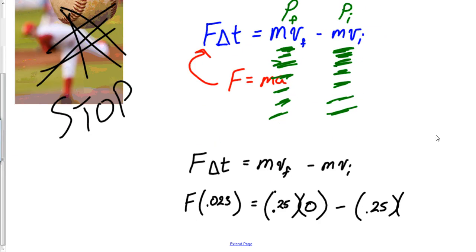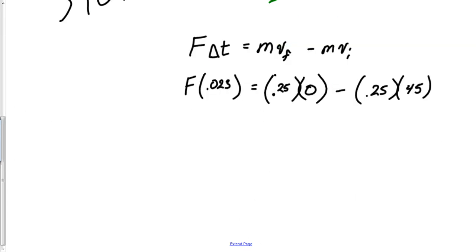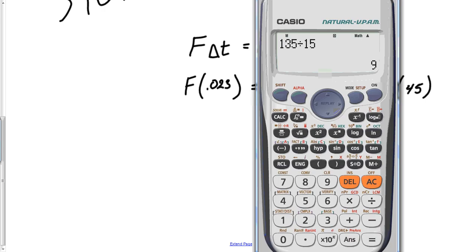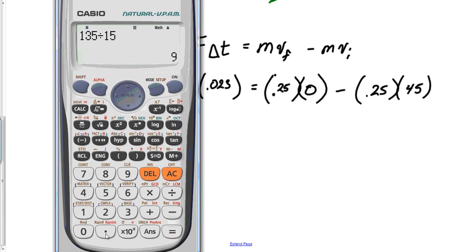0.25 times 45, do I even need to worry about this zero part in here? So this is negative 11.25. F divided by 0.023.